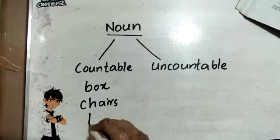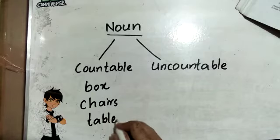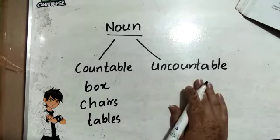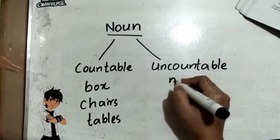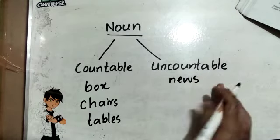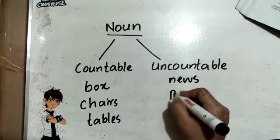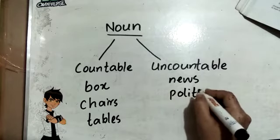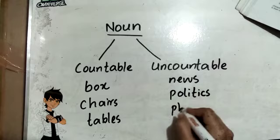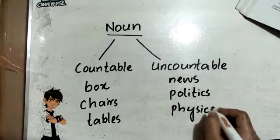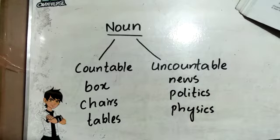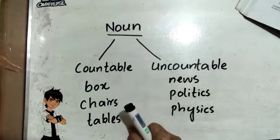And in the case of uncountable noun, if I say like news, then news is such a thing that cannot be counted. Second, if I give example of politics or physics, these are such examples that cannot be counted. So these are all uncountable nouns whereas the previous examples are countable nouns.